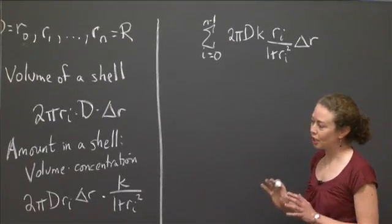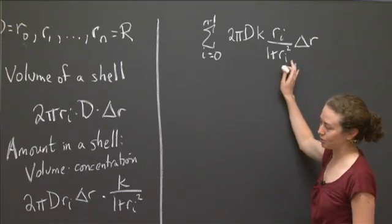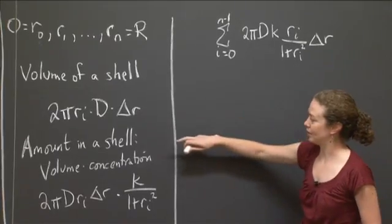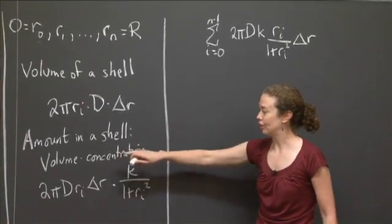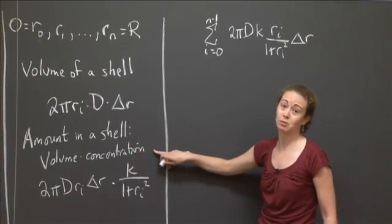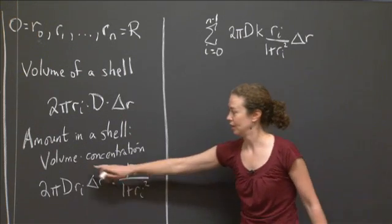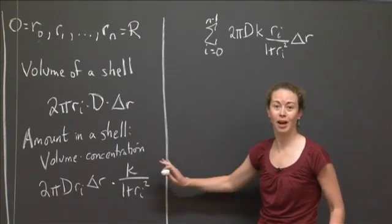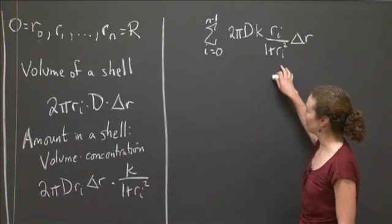And again, we always want to check and make sure, I didn't write in any units, but did the units make sense? Well, we know the units make sense, because when I did the amount in a shell, I did volume times concentration. And volume times concentration is going to be in grams. This is in cubic meters, this is in grams per cubic meter. So I know I have the right units, so that's a good way to check.